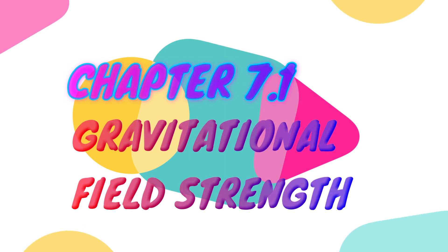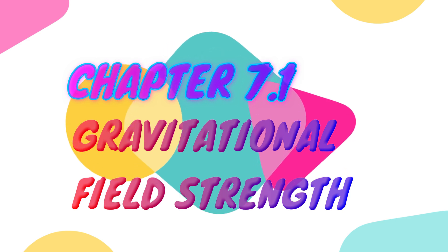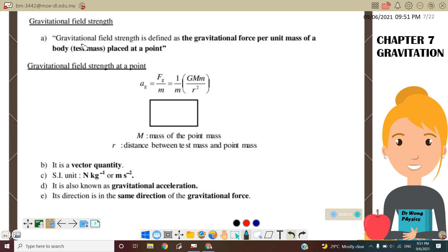Welcome back to my channel. Today we will continue with Chapter 7: Gravitation. In this video, we will discuss a new subtopic — Gravitational Field Strength. Gravitational Field Strength is defined as the Gravitational Force per unit mass. We can label it as Ag, where Ag is equal to Gravitational Force per unit mass.